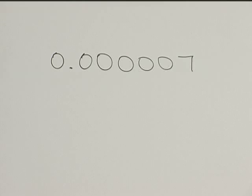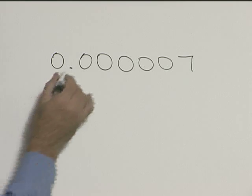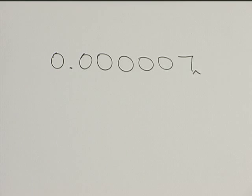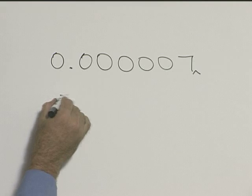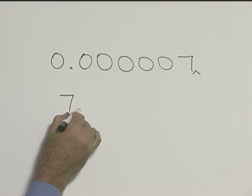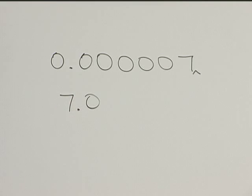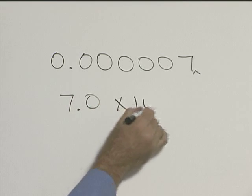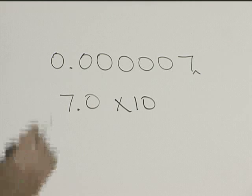For this problem, let's write 7 millionths as a scientific number. So to do that, our decimal is here. We want our decimal to be after 7, so it'll be 7.0 times 10 to the what?